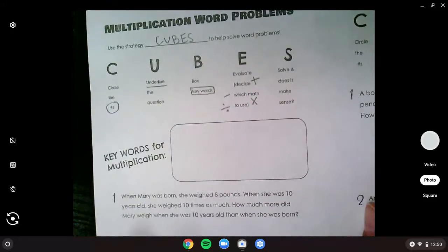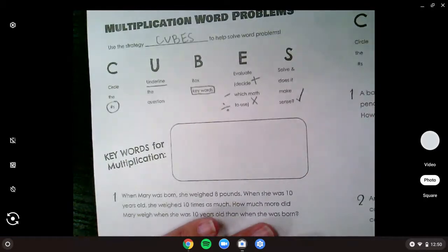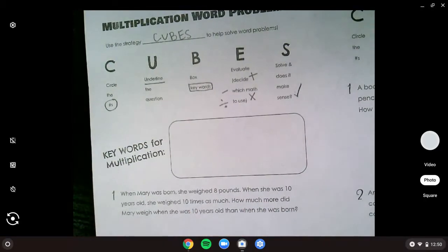The E is for evaluating. And the S means we go ahead and solve and check if it makes sense. That's our very last step. We're going to make word problems a breeze by using cubes.